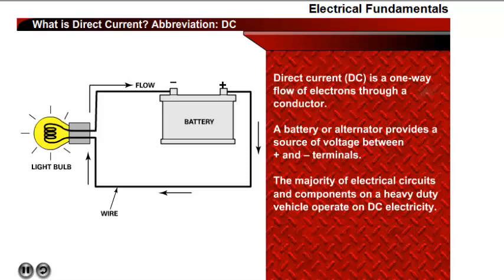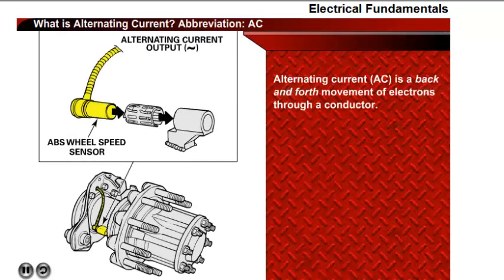Some examples of DC components are the lights, engine starter, and transmission shift system. Alternating current, or AC electricity, is a back-and-forth movement of electrons through a conductor. For example, wheel speed sensors on vehicles with ABS generate an alternating current electrical output.